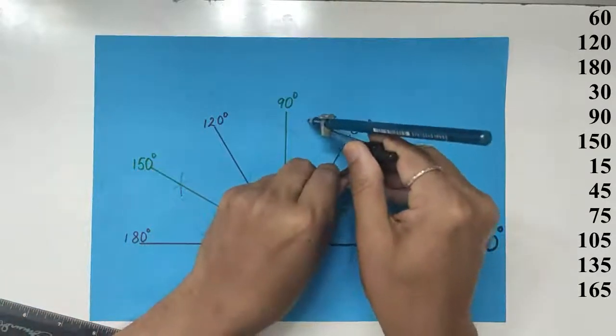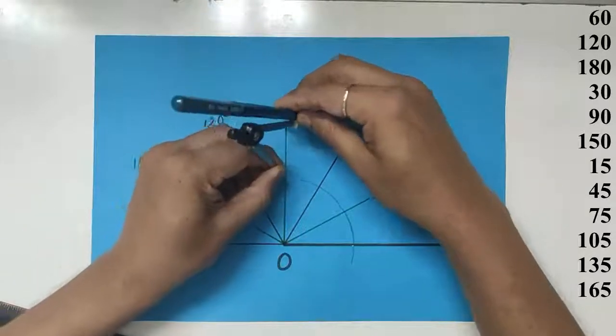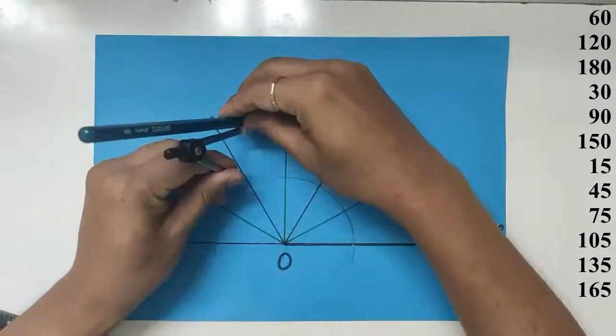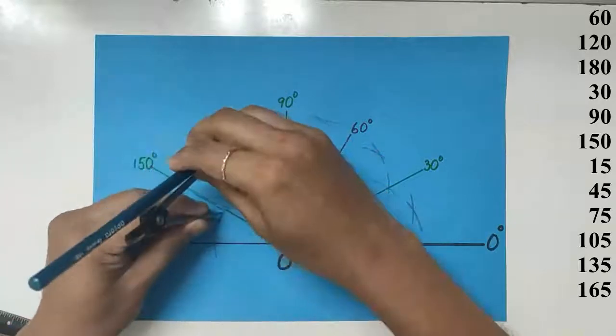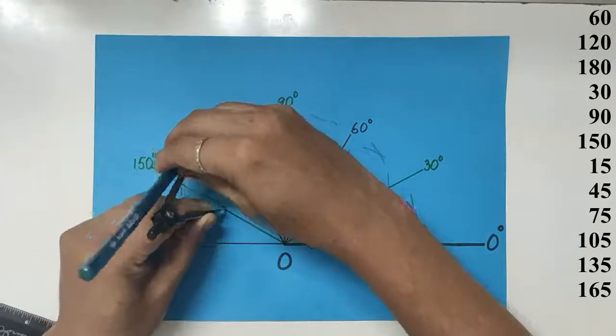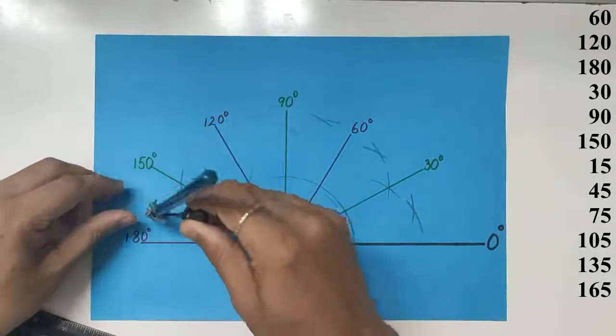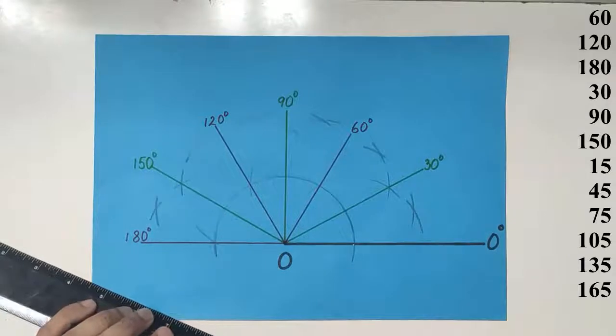Between 60 and 30, we get 45. Between 60 and 90, we get 75. Between 90 and 120, we get 105. Between 120 and 150, we get 135. And between 150 and 180, we get 165.